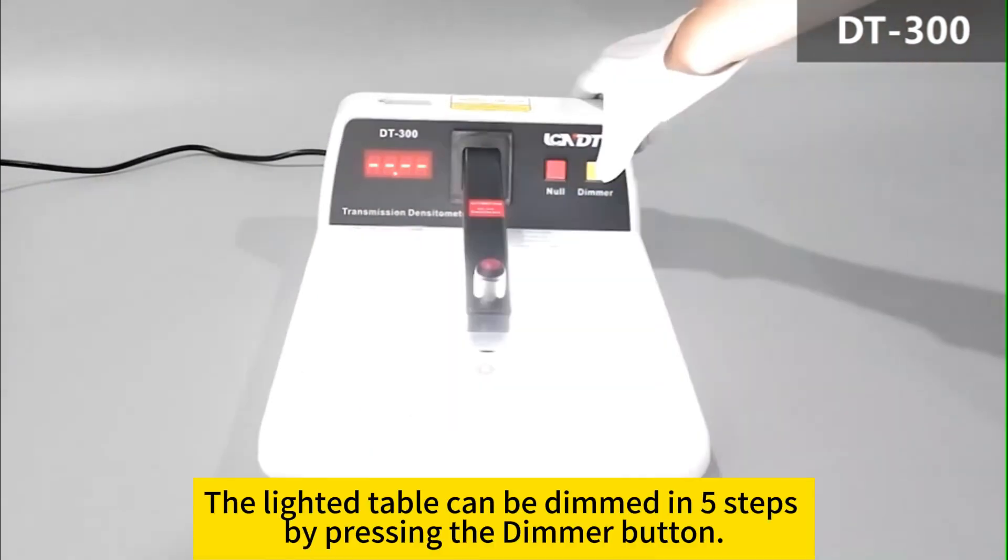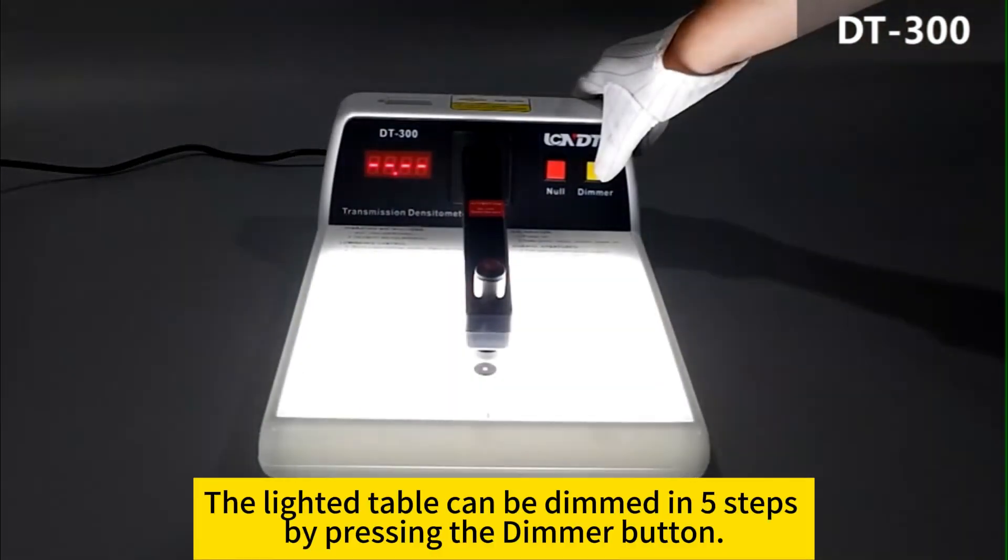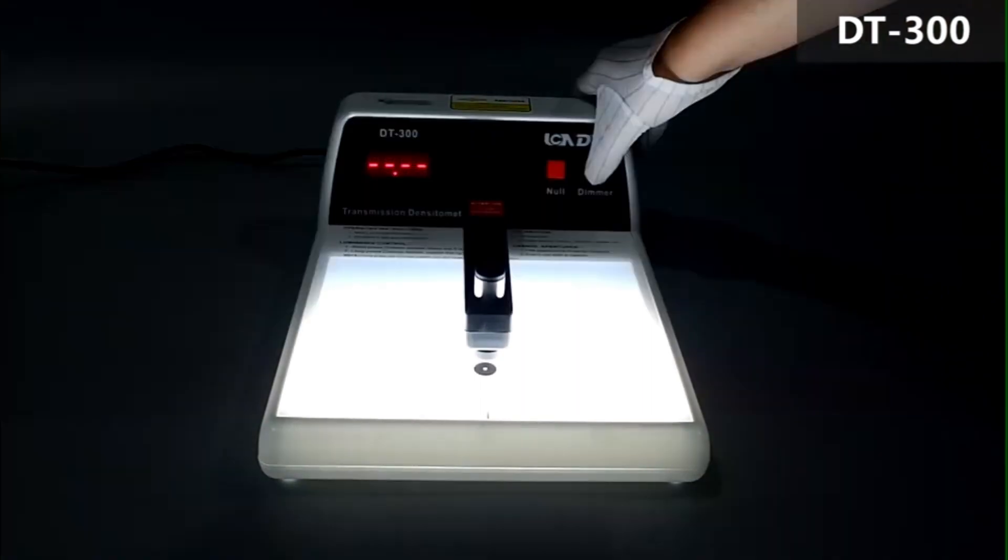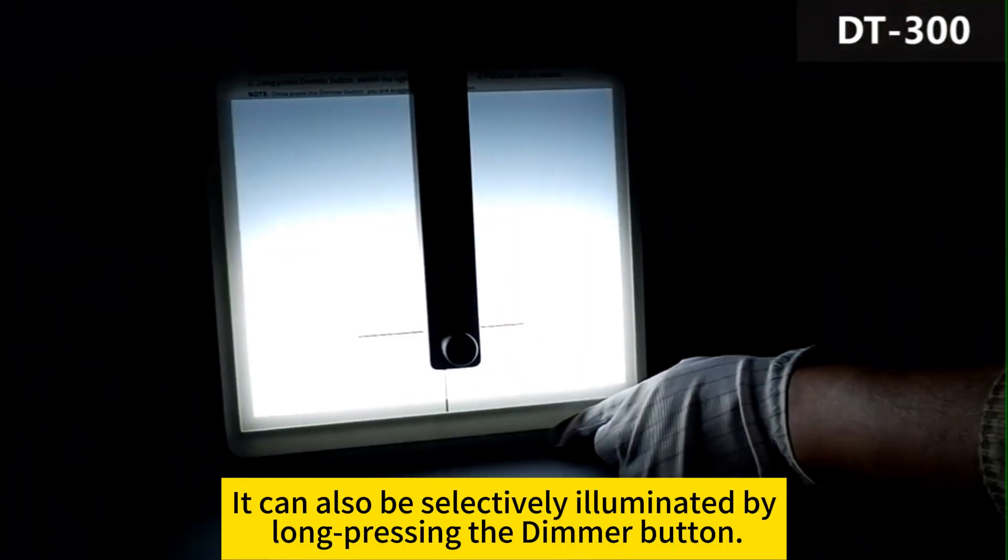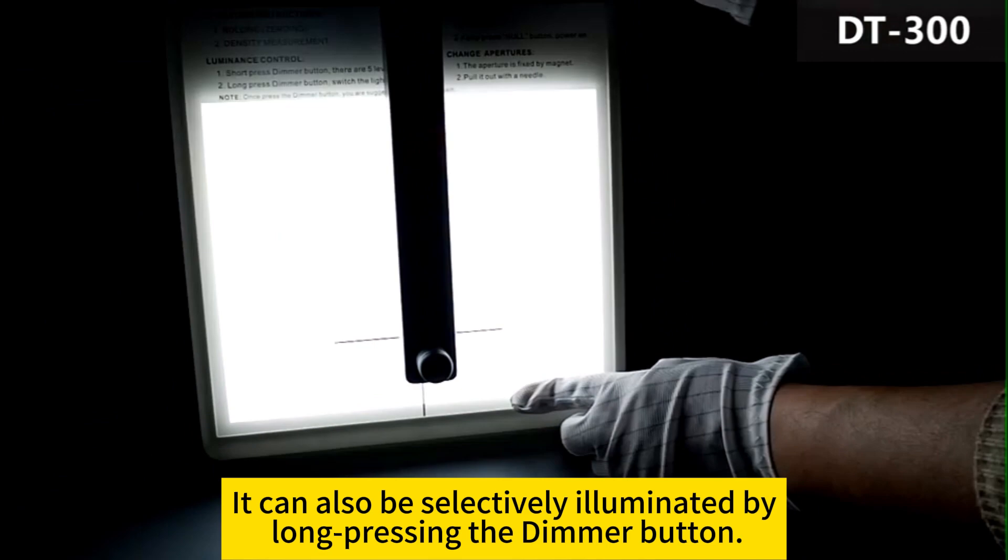The lighted table can be dimmed in five steps by pressing the dimmer button. It can also be selectively illuminated by long pressing the dimmer button.